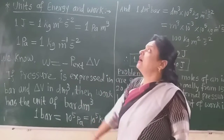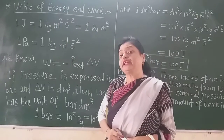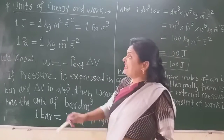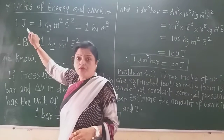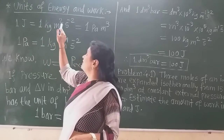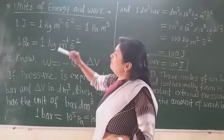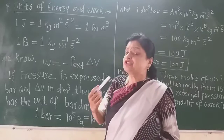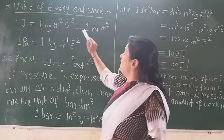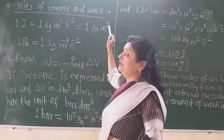The next topic is the units of energy and work, which are very important. The unit is fixed: 1 joule is equal to 1 kilogram meter squared per second squared. If we have to convert joules into Pascals, then 1 joule equals 1 Pascal per meter cube.